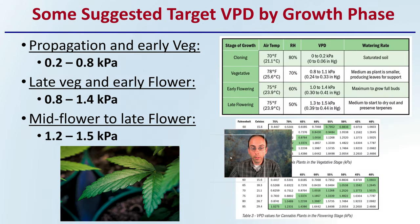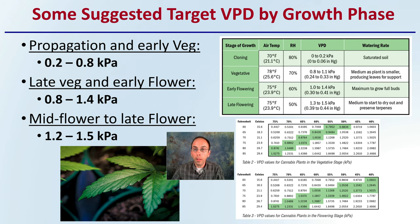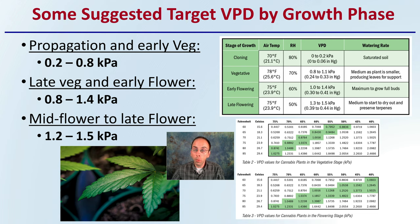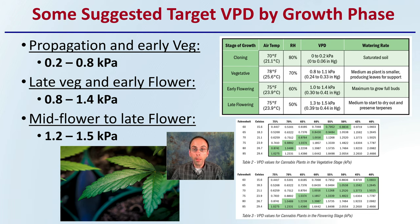Some suggested target levels of VPD by growth phase. Typically, as plants get older, we want to increase the VPD. For propagation and early veg, a general target is 0.2 to 0.8 KPA. For late veg and early flower, 0.8 to 1.4 KPA. For mid-flower to late flower, 1.2 to 1.5 KPA. These are a great way to have a target level set, at least initially, as you're looking at different phases of your cannabis plants.